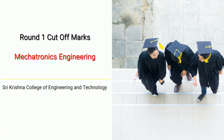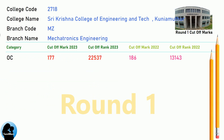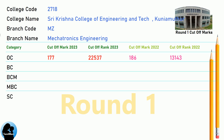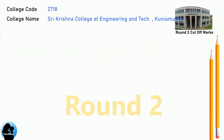DNEA 7.5 Reservation Cut-Off for Shri Krishna College of Engineering and Technology in Mechatronics Engineering. DNEA Round 2 Cut-Off for Shri Krishna College of Engineering and Technology in Mechatronics Engineering.